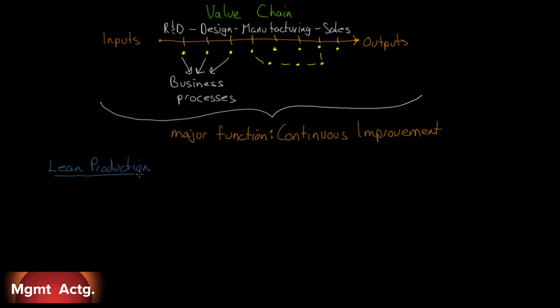That's where the management accountant has a lot of power in the organization — people look to them and ask, what do you think? There are different methods of achieving this continuous improvement.